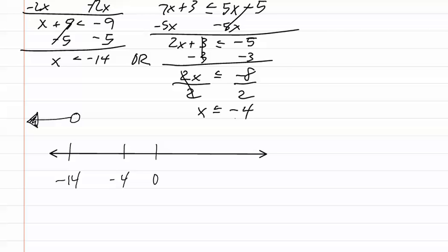The second one is less than or equal to so it is a closed dot on negative four also going towards the left. As you can see they both overlap so we draw the bigger one so we cover more of the possibilities.